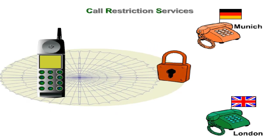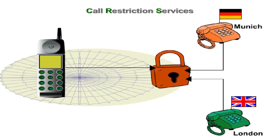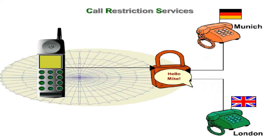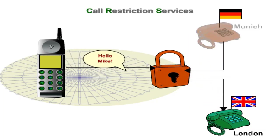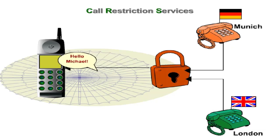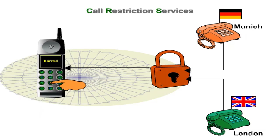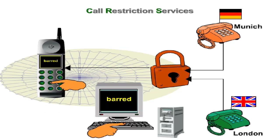There are basically two categories of call restriction services: one refers to outgoing calls and the other to incoming calls. The service offers several possibilities, such as barring all outgoing and incoming calls, barring all outgoing international calls, or barring all incoming calls except those coming from the country of the home network. The calls can be barred manually by the subscriber or by network configuration.